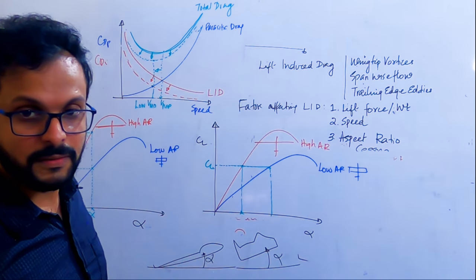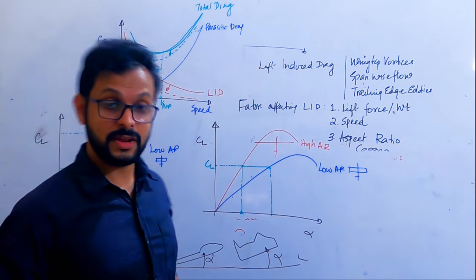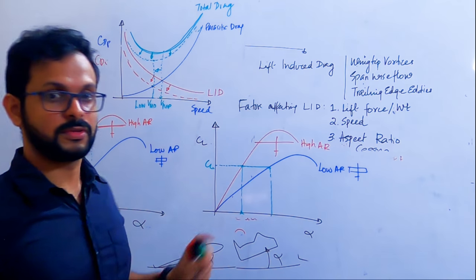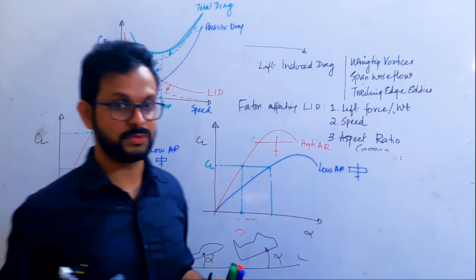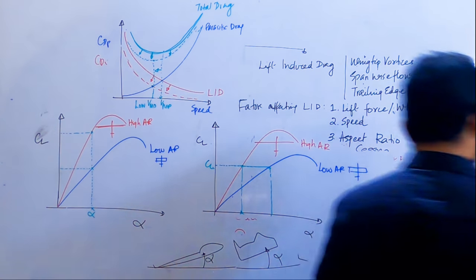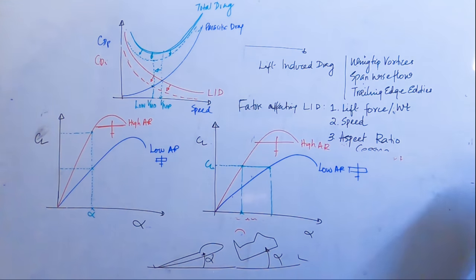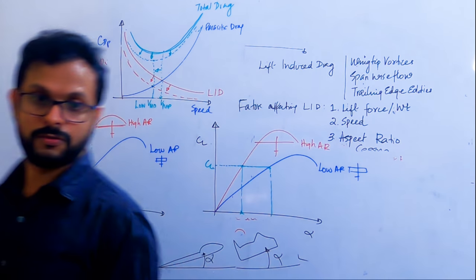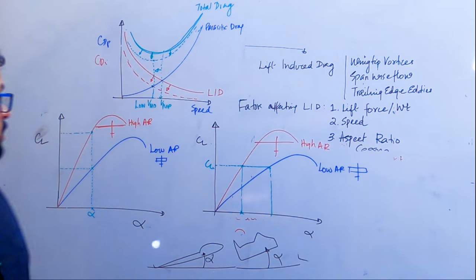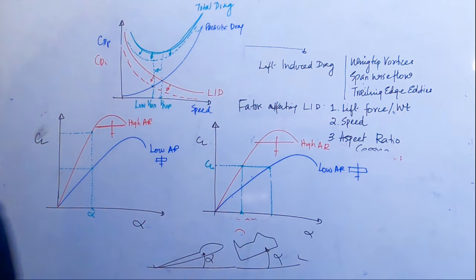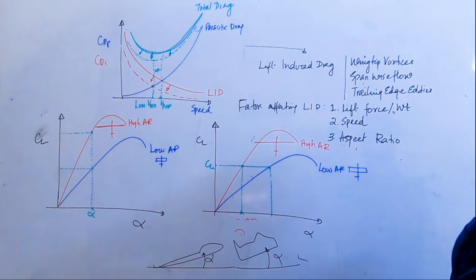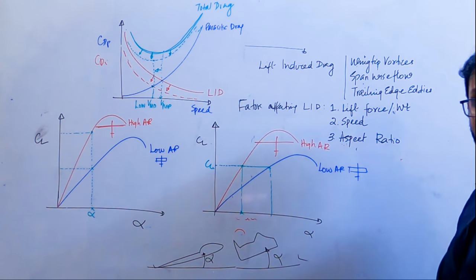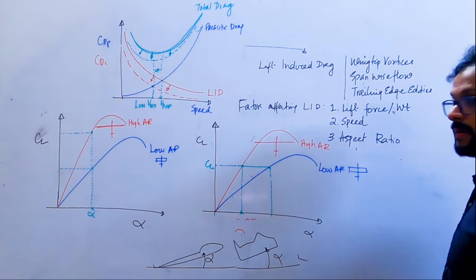These two graphs are very helpful in understanding this concept. This is a variation of coefficient of lift with angle of attack for high and low aspect ratio wings. So the three factors affecting lift-induced drag are: the lift force or pressure difference, the speed, and the aspect ratio.